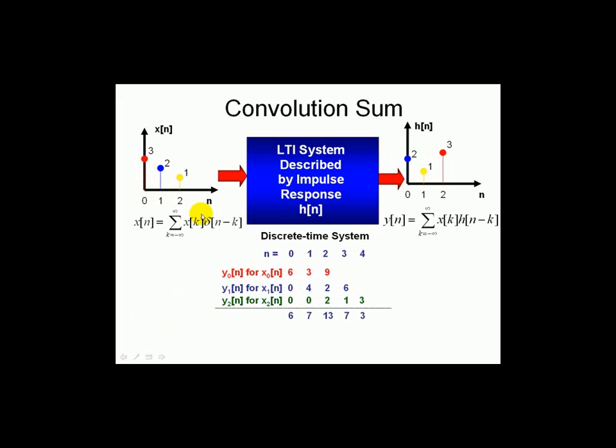Adding these, due to the superposition and linearity property associated with this system, we get 6, 7, 13, 7, and 6, at the corresponding ends right here.